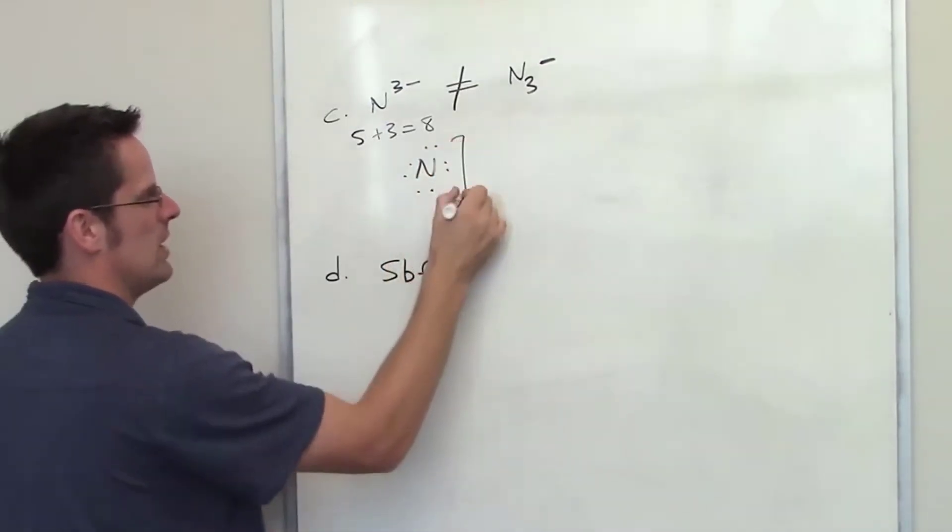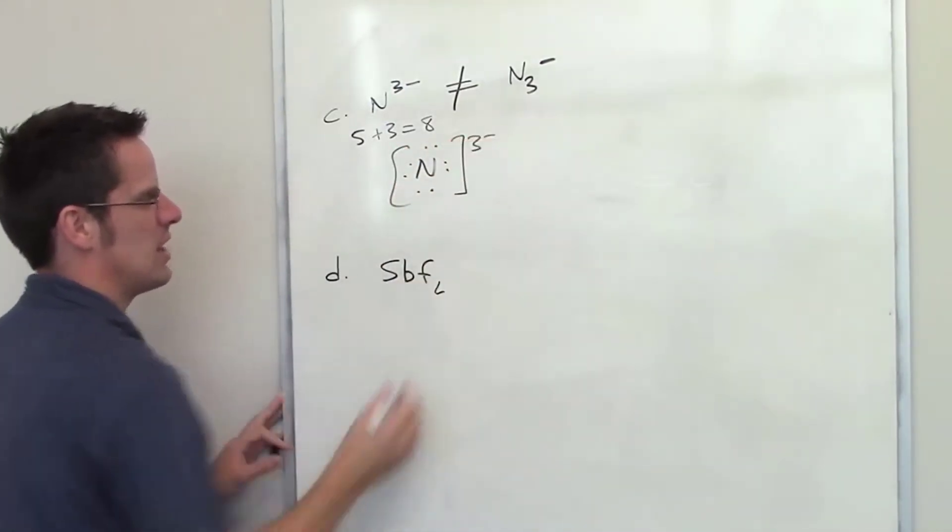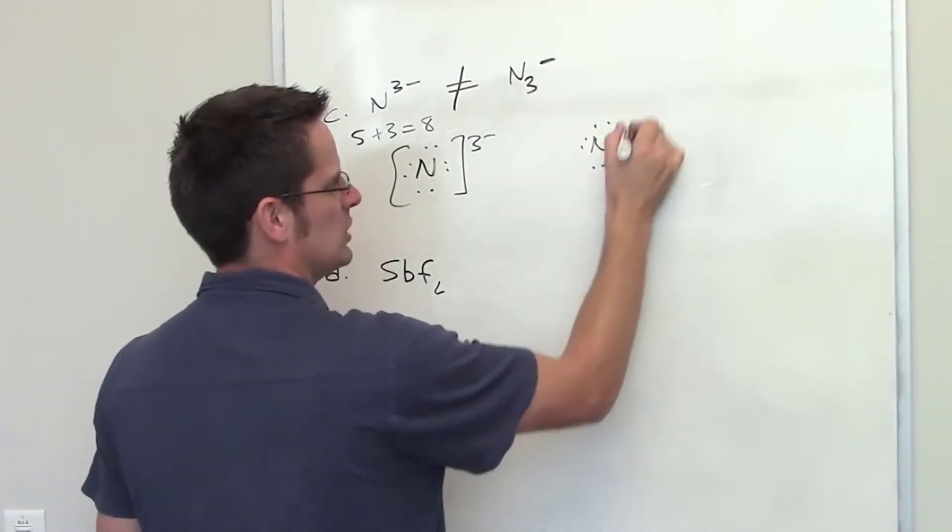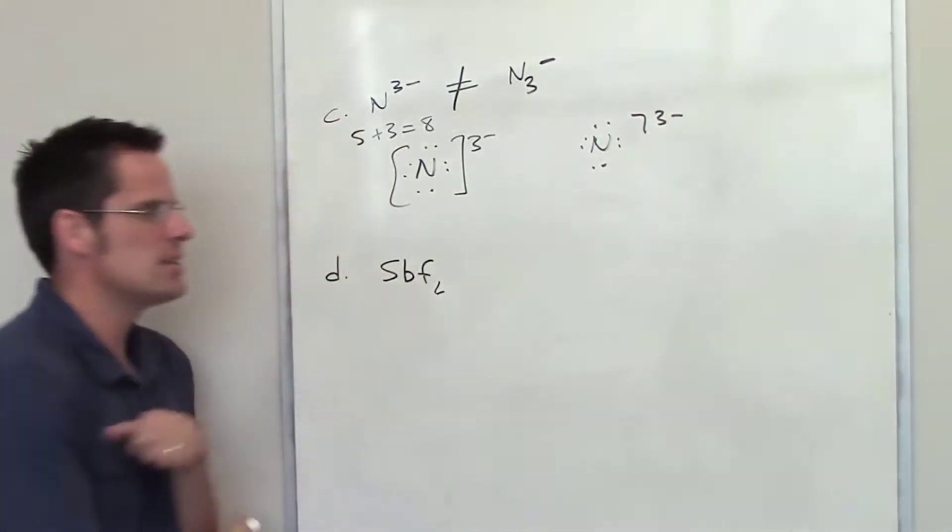So the Lewis structure of that particular ion is just that. I've got eight electrons around it. And if I want, and I typically do this, I'll write a set of brackets and a 3-. Sometimes chemists do that a little bit shorter, and they'll just write a single bracket up here. Same thing.